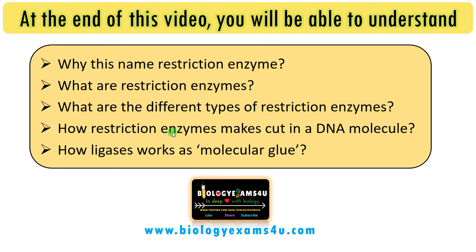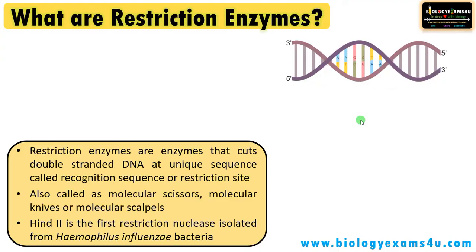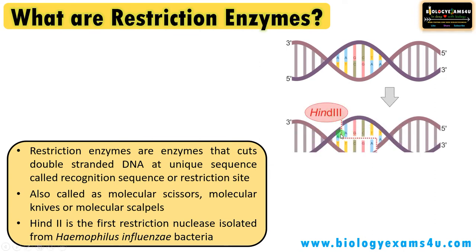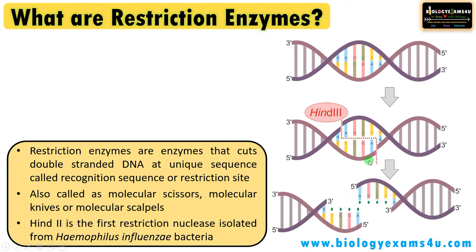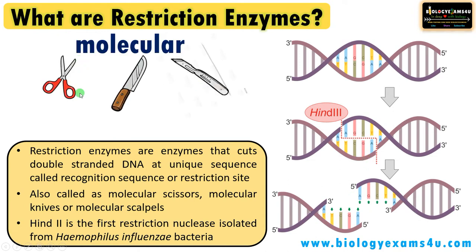Restriction enzymes are enzymes capable of making cuts in a double-stranded DNA molecule at unique sequences called recognition sequences. Because this enzyme is capable of cutting DNA molecules, it is also called molecular scissors, molecular knives, and molecular scalpels. The discovery of restriction enzymes marked the beginning of recombinant DNA technology.